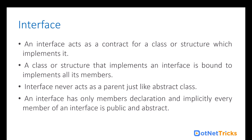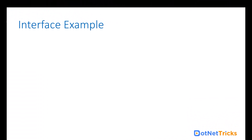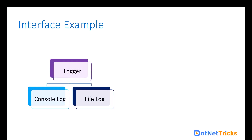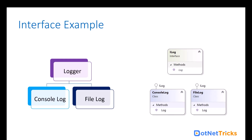All the members of the interface are implicitly abstract and public. Now let's understand the interface with an example. Let's say there is a requirement for logging user activity. We have a logger, and for logging we can have a console log and we have a file log — meaning either we can log the activity to the console or log the activity to a file, such as a text file. What we can do here is create an ILog interface and declare a log method. This log method will have a different implementation for logging to the console and a different implementation for logging to the file. We have two classes: ConsoleLog class, which implements the ILog interface, and FileLog class, which also implements the ILog interface.